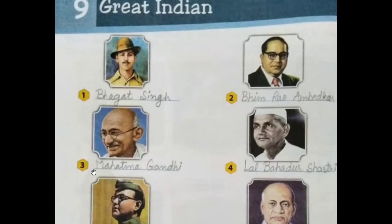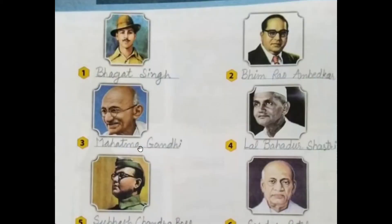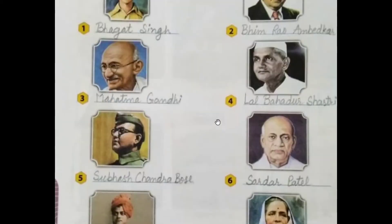The third one is Mahatma Gandhi. He was born on 2nd October 1869 in Porbandar, Gujarat. He is known as the Father of the Nation.